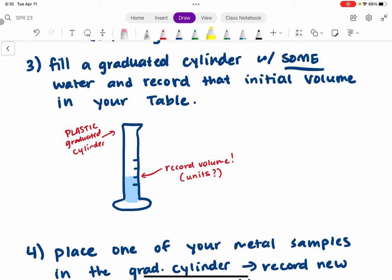Then you're going to fill a plastic graduated cylinder with some water and record that initial volume in your table. I'm not going to tell you how much water you can use. As long as you record the initial volume and you don't fill it up all the way to the top, because remember you have to have room for your metal, that's fine. You can put as much water as you want.